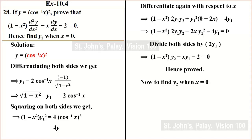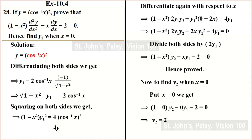This is how to prove that result. Now putting x equal to 0, we get 1 minus 0 square into y2 minus 0 into y1 minus 2 equal to 0, which implies y2 equal to 2.